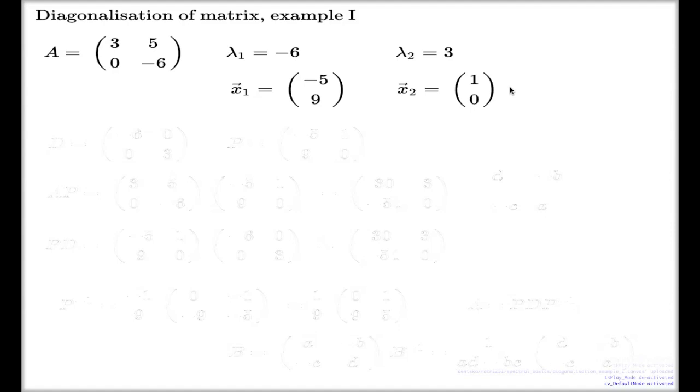Right, so for this matrix, diagonalization is achievable because we have exactly two eigenvalues which coincides with the dimension of my matrix. And if you look at the corresponding eigenvectors, they are clearly linearly independent.